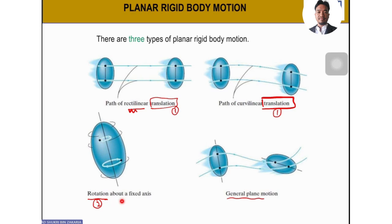Rotation is a spinning motion. Then we have general plane motion, which is neither pure translation nor pure rotation — it is a combination of both rotation and translation. So we have three main types of motion: translation, rotation, and general plane motion.